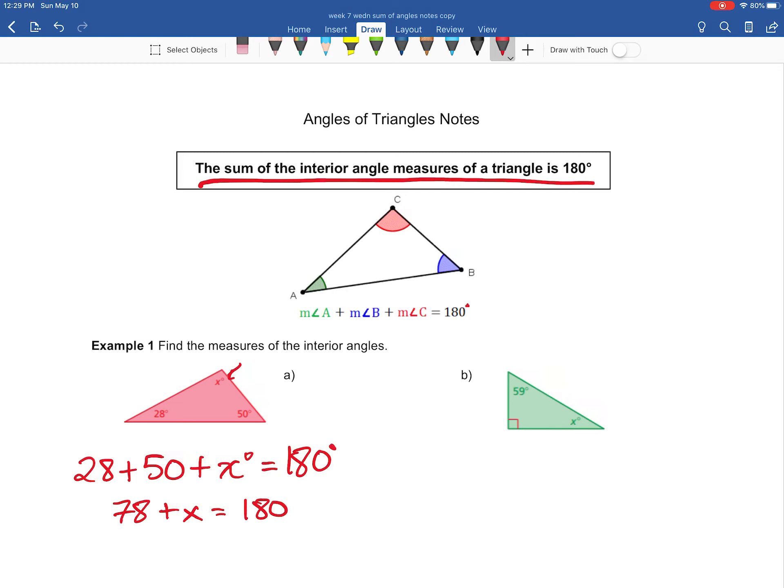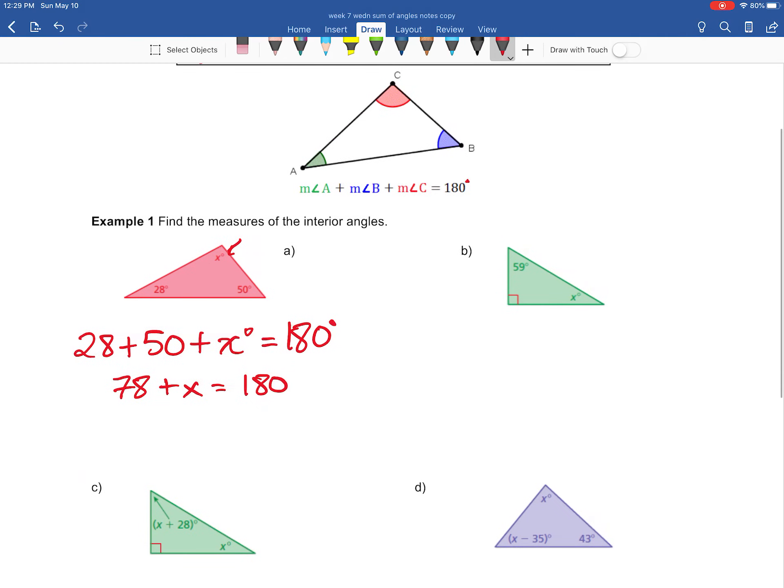When I take all three of those interior angles together, we should get 180. Now 28 plus 50, we get 78 degrees plus x equals 180. And now all we have to do is subtract to solve for x.